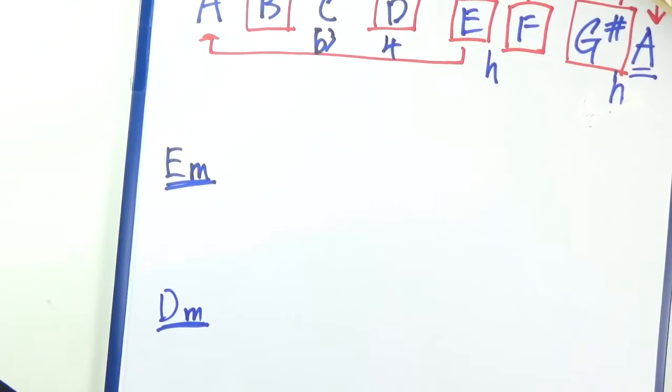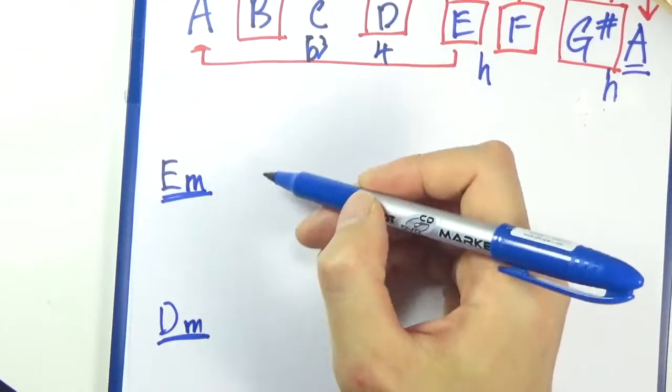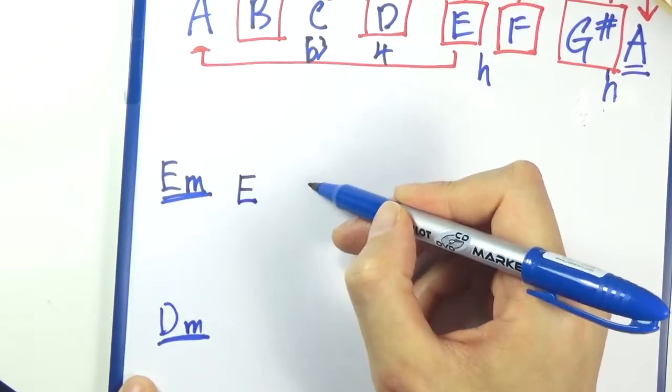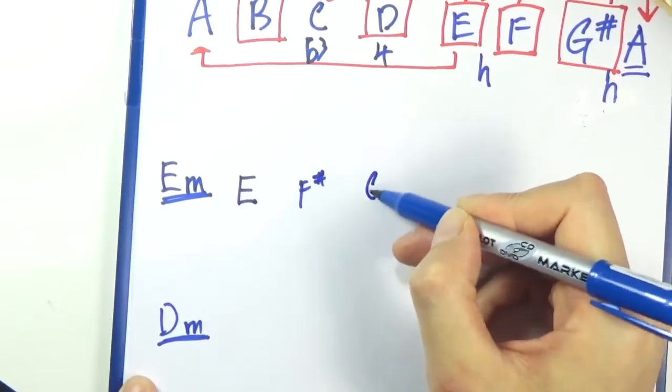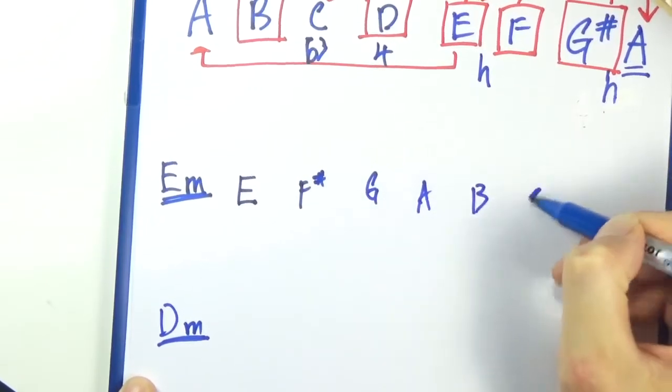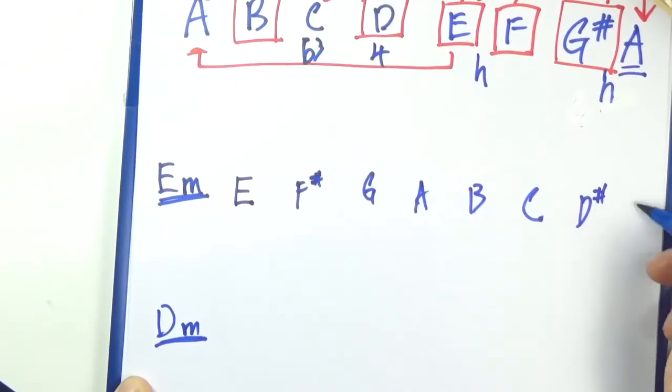Let's quickly work out two more examples. E minor. So let's write out the scale first. E, F sharp, G, A, B, C, D sharp, E again.